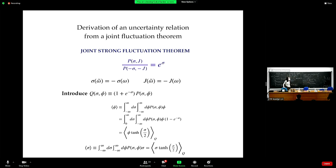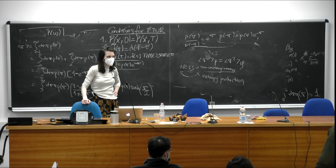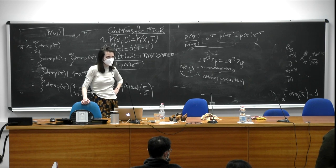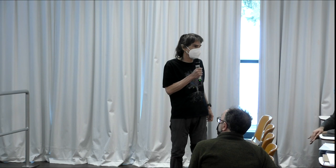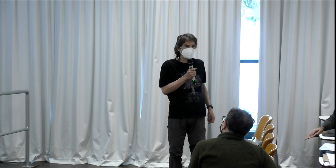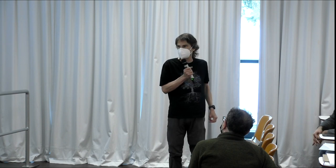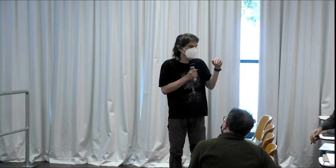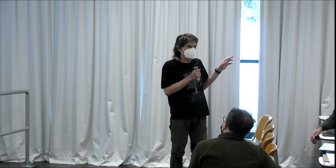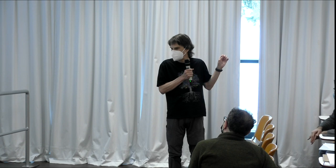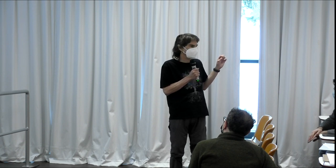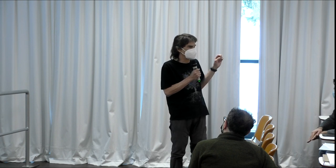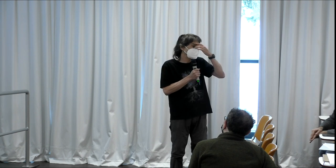It may be worth taking a moment to address the question. The proofs of the TURs — I don't know of any one of them that's actually intuitive. They tend to be really messy. This one is by far one of the simplest and cleanest. In particular, the original ones and many subsequent ones use what's called level 2.5 large deviation theory — and it's a horrible mess.